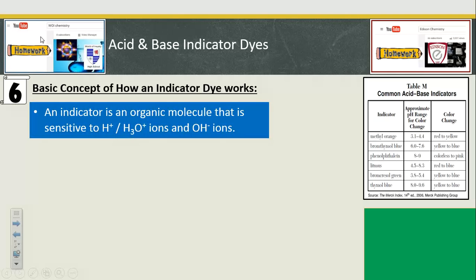But here's the basic concept. Indicator is a molecule that's sensitive to the acid or base ions. Acids are hydronium, bases are hydroxide.